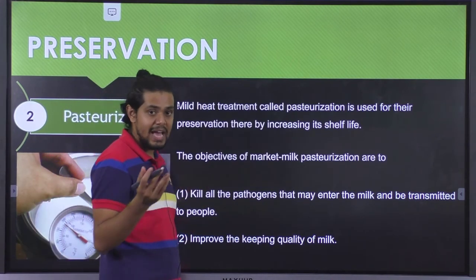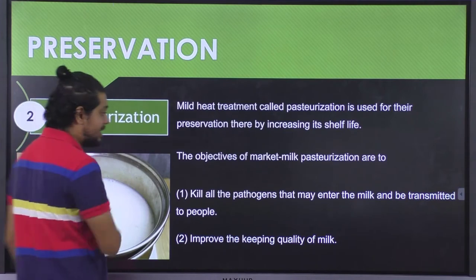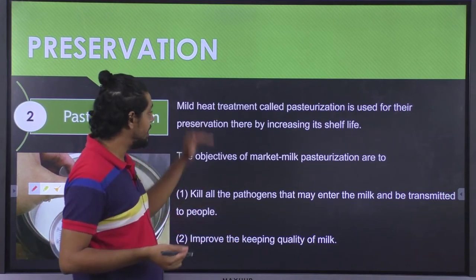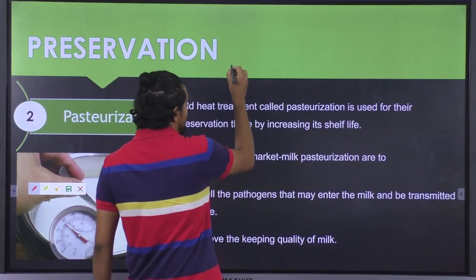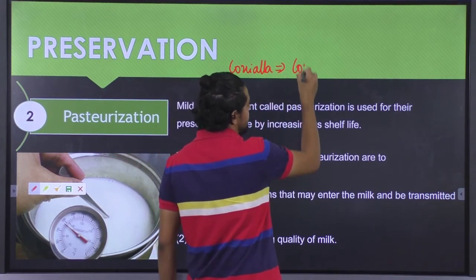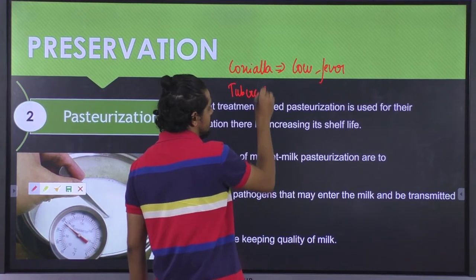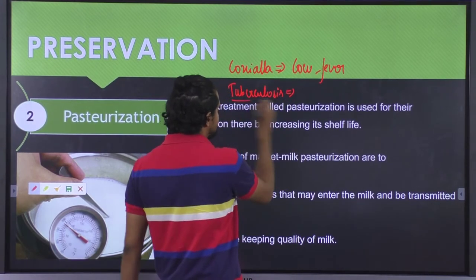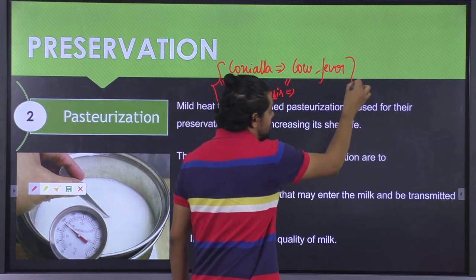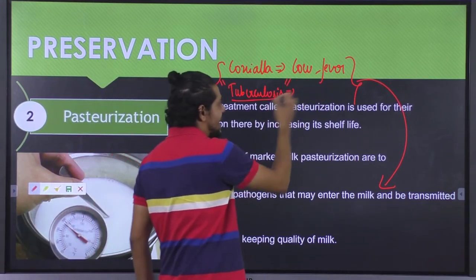There are two important objectives of pasteurization of milk. First is to kill the pathogens that might enter the milk and be transmitted to people. As we already know, milk has certain important pathogens such as coxiella, which causes Q fever, and mycobacterium tuberculosis which causes tuberculosis. These are two important pathogens which might seek entrance into the milk and thereby transmit to the consumer, ultimately causing Q fever as well as tuberculosis.